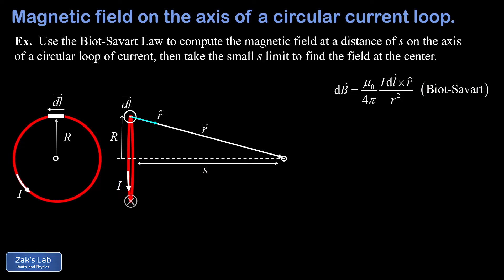The magnetic field contribution takes a direction given by the cross product of dl into r-hat. To get that direction we orient our right hand to sweep our fingers from the direction of dl — straight out of the page — to the direction of r-hat. This means our thumb lies in the page and points at an angle. The result of a cross product is always perpendicular to each participant vector, so dB is at right angles to the position vector and lies in the page.